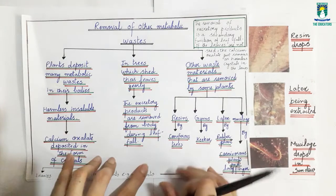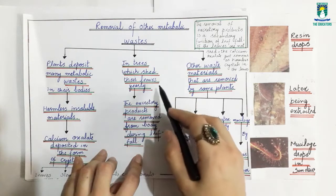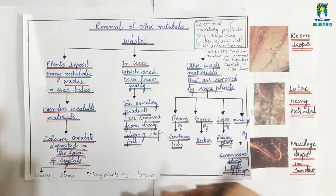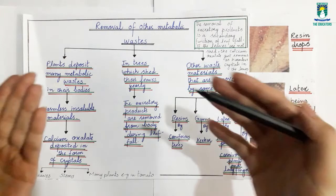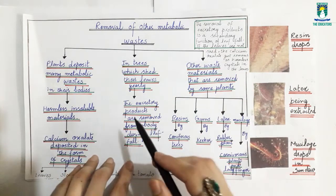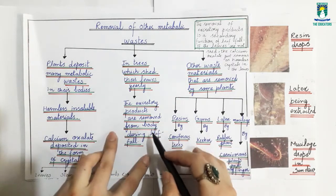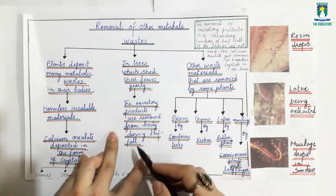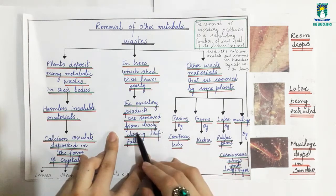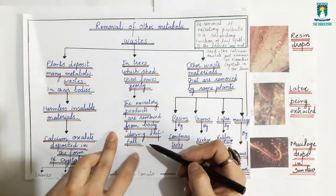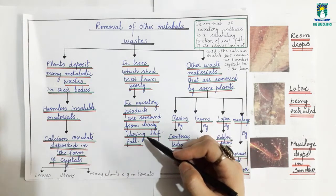Now we will discuss the removal of metabolic waste in other types of plants, like trees that shed their leaves yearly. These trees store their metabolic waste and excretory products in their leaves. When the leaves fall, the metabolic waste and excretory products are removed from the body. These are called deciduous trees, like maple trees.